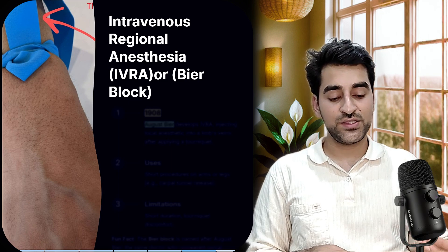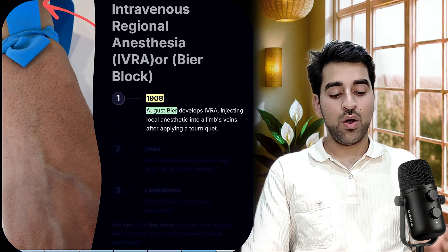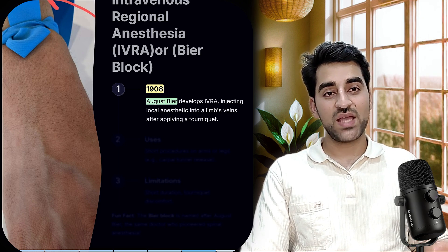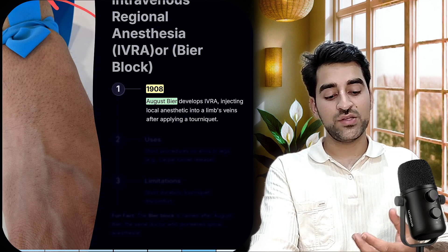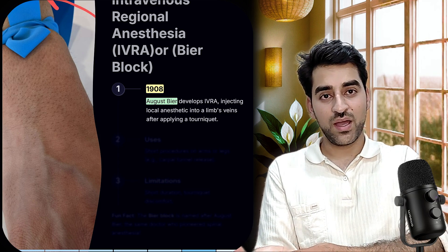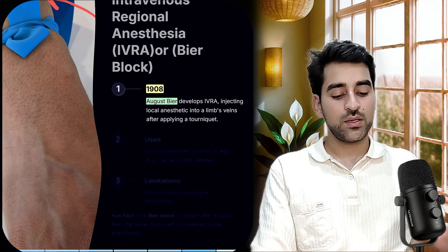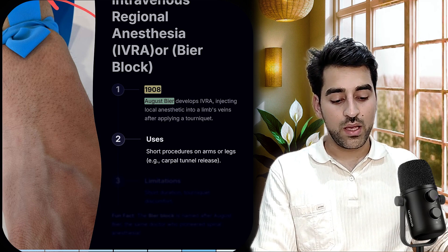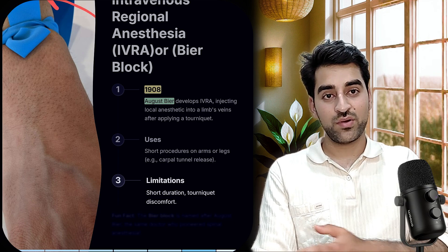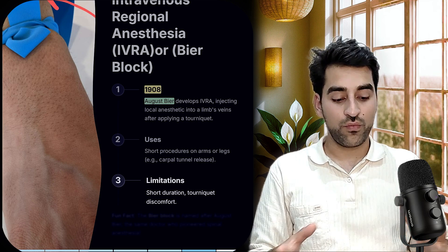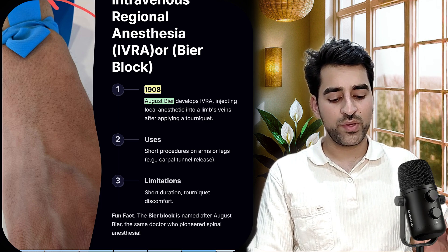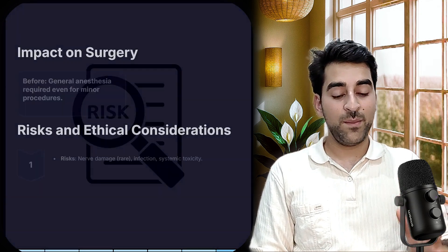In 1908, August Bier also developed IVRA — intravenous regional anesthesia, also known as Bier block. He applied a tourniquet to the arm and injected local anesthetic into the limb, achieving numbness for pain-free surgery such as wrist repair. It is used for short procedures on the arm or leg. Limitations included a short duration of action, drug washout once the tourniquet was removed, and discomfort from the tourniquet itself.